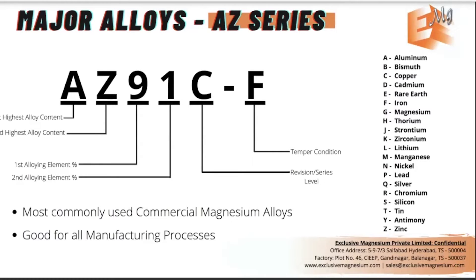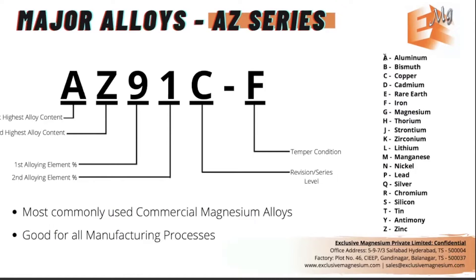I'll cover the three major series of alloys currently available in India that you'd deal with if you're getting into magnesium production. So how do you recognize what those names mean? As you can see from this presentation, this is the AZ series, where 'A' stands for the highest alloy content. On the right side there's a list of alloying elements that can be used in magnesium — you can use that to decipher what 'A' means and what 'Z' means: that's aluminium and zinc.